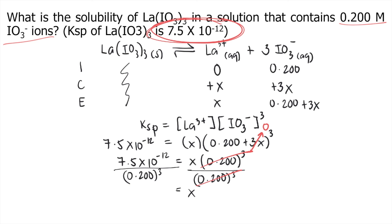0.200 cubed cancels on the right side, so X remains. On the left side, we have 7.5 times 10 to the negative 12 divided by 0.200 raised to 3. That equals 9.375 times 10 to the negative 10.